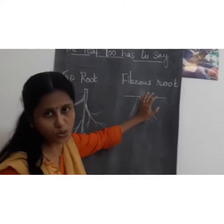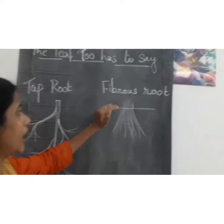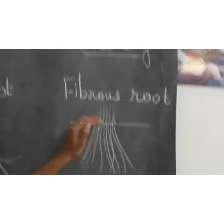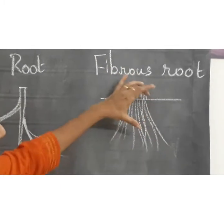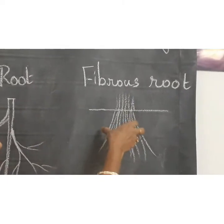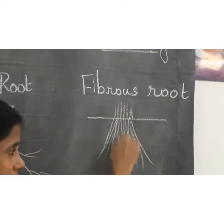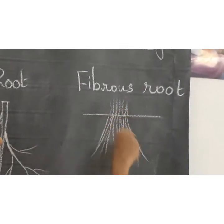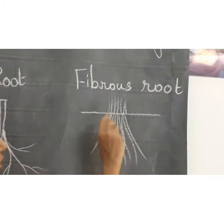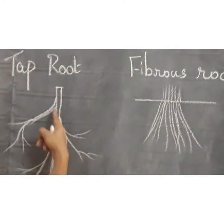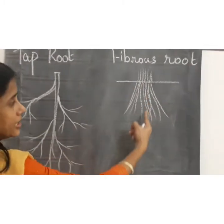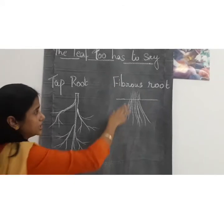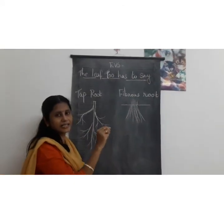Then comes fibrous root. Fibrous root means here it is a group or cluster of roots growing from the base of the stem. There is no main root. Look at these two pictures — here there is a main root, here there is no main root. Only this cluster of roots growing from the base of the stem is called fibrous root.